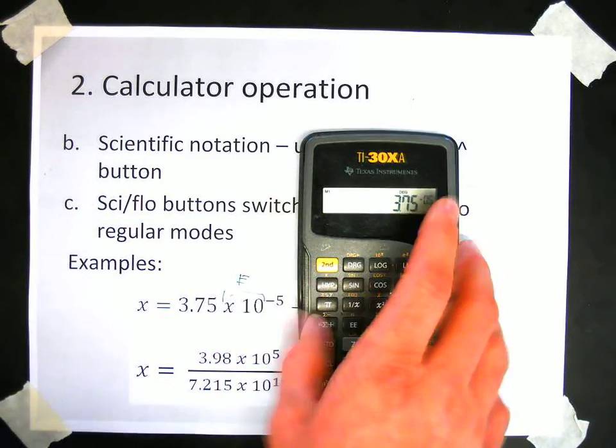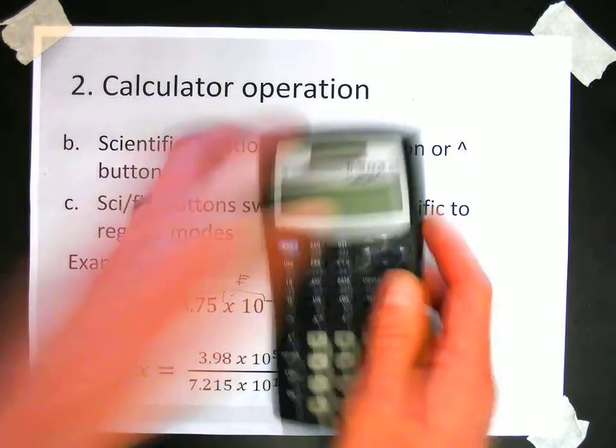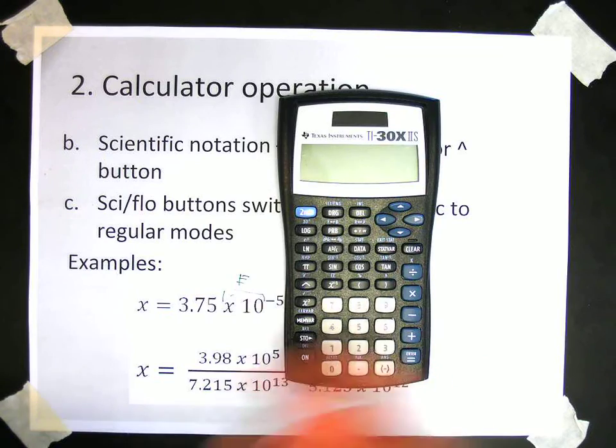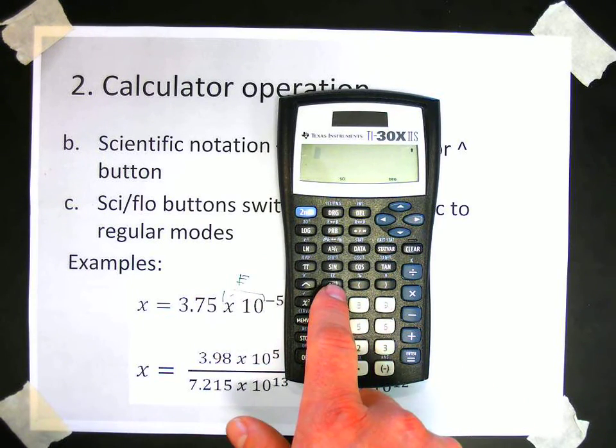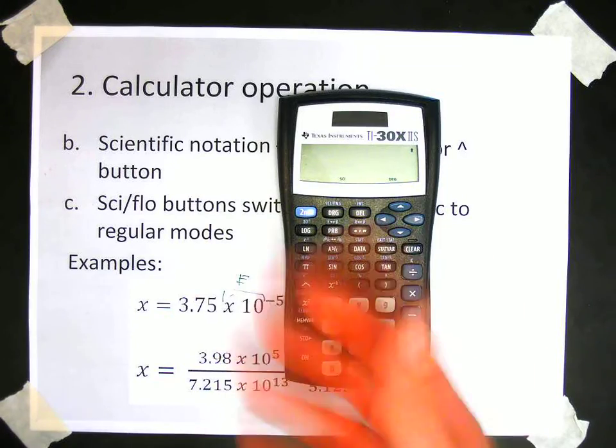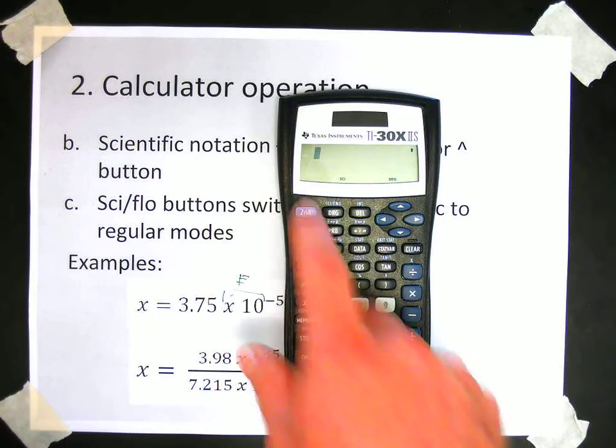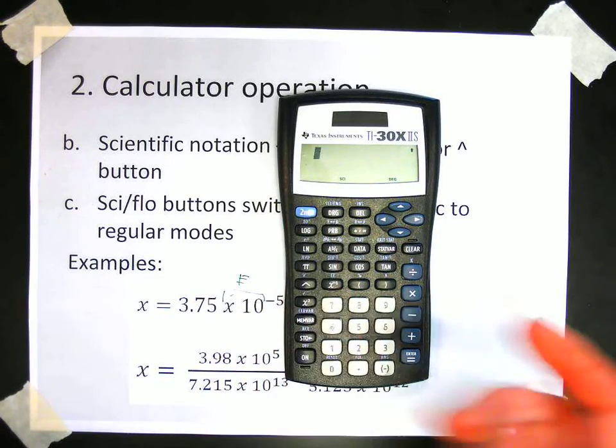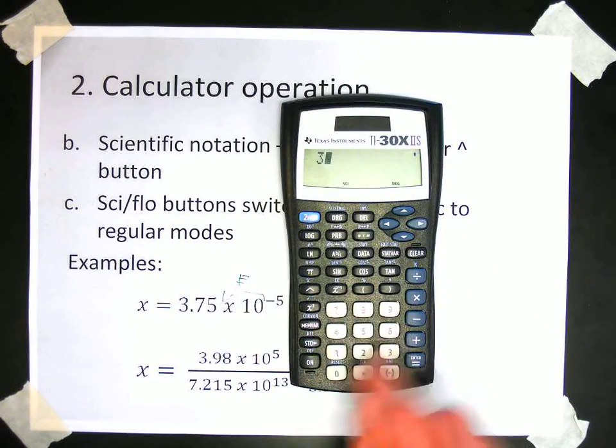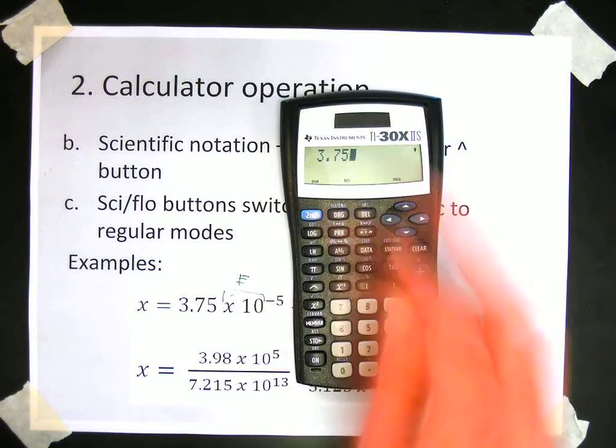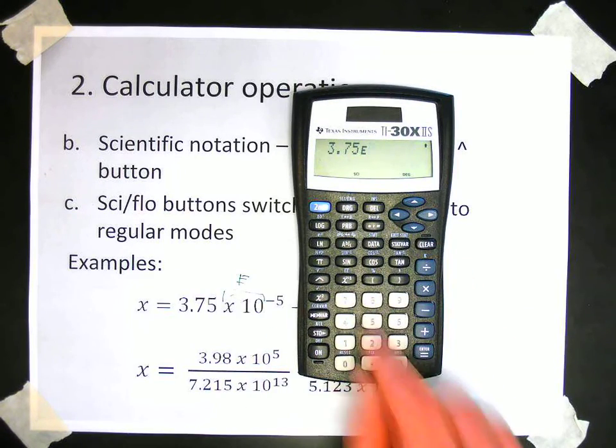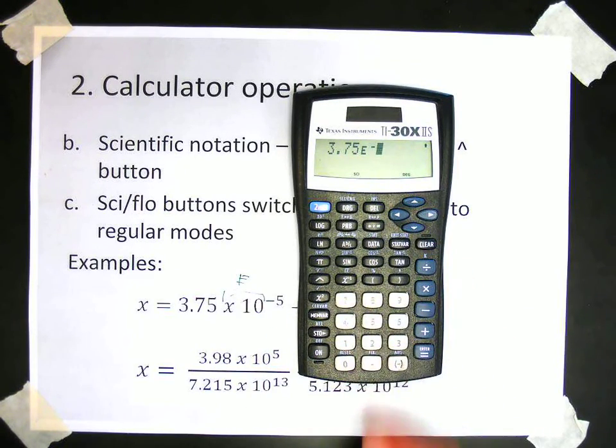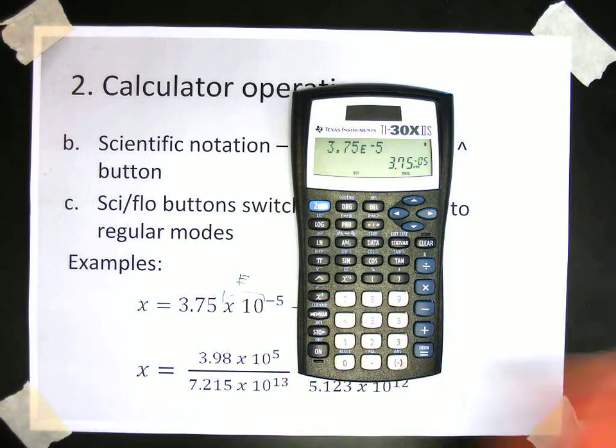So on different calculators, the E button will be in different spots. So for instance, on this calculator, the E button is right here. And I need to press the second key to access it. So for this one, it would be 3.75 second E. And then the sequence is different too. I do the negative first, then the 5. Enter. There we go.